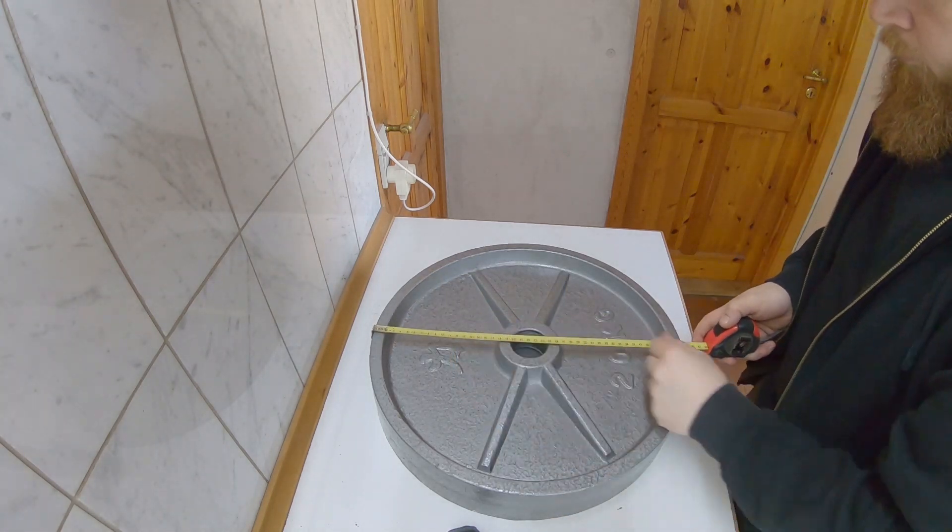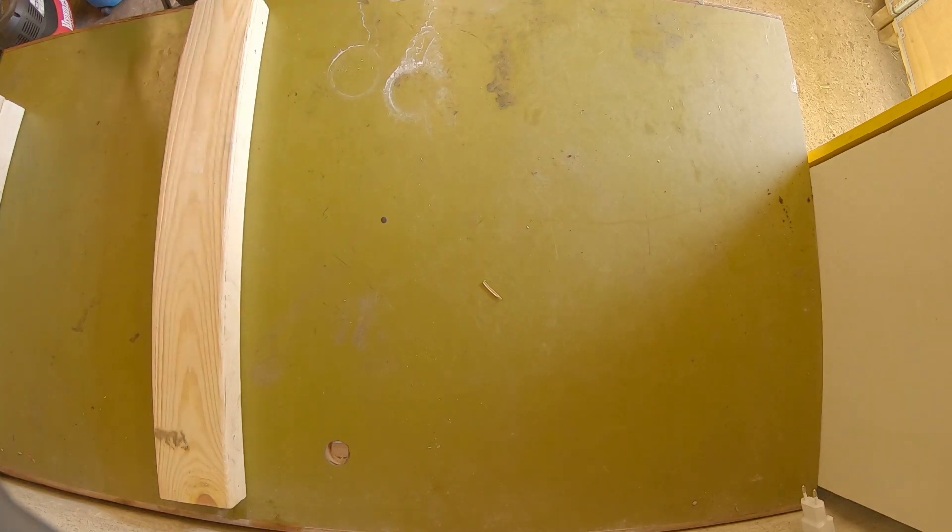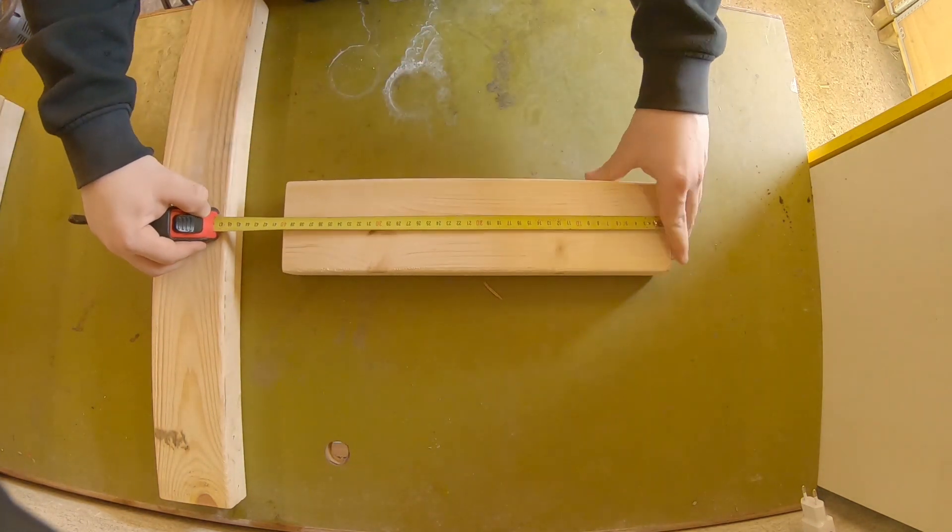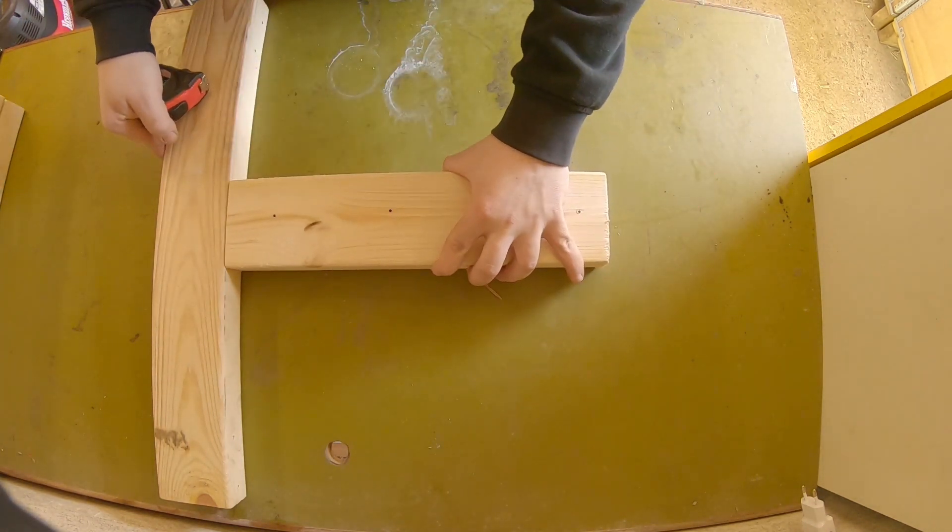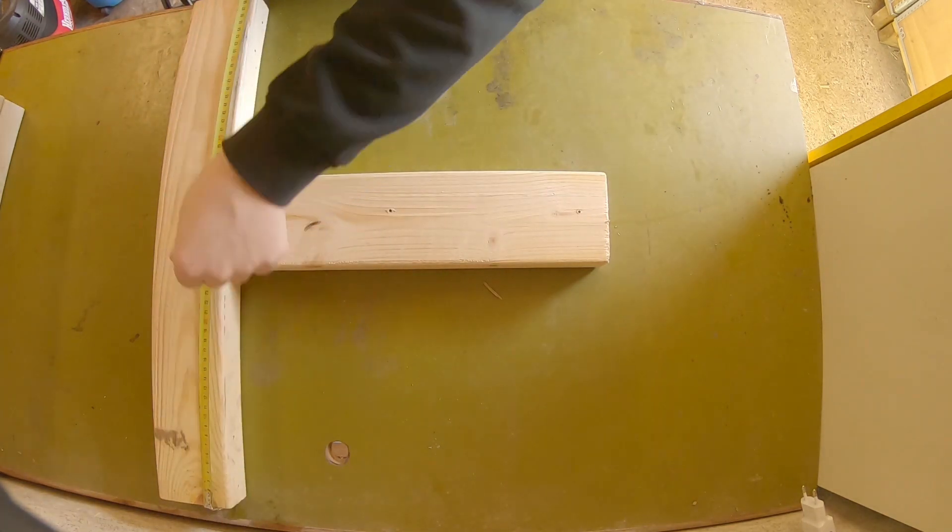Just wanted to show you guys a little homemade project I did today. It's a prowler or sled. First thing I did was to measure the diameter of my plates. It's 45 centimeters, which is pretty standard.